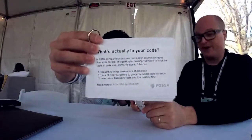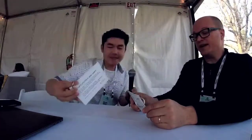So what's actually in your code? In 2018, companies consume more open source packages than ever before. It's getting increasingly difficult to track the scale of code used primarily due to three forces: breadth of ways developers share code; lack of clear structure to properly model code inclusion; and inaccurate discovery tools and low quality data.